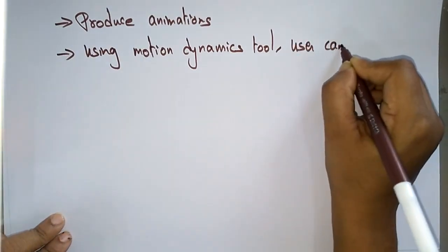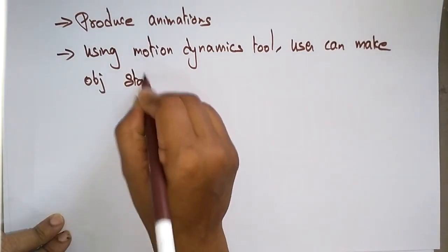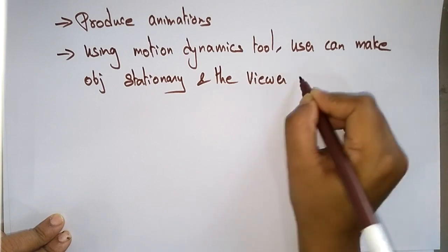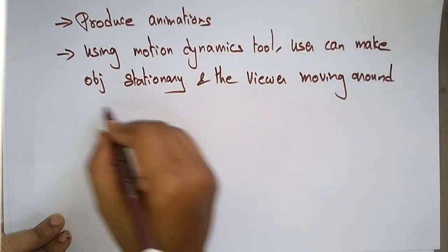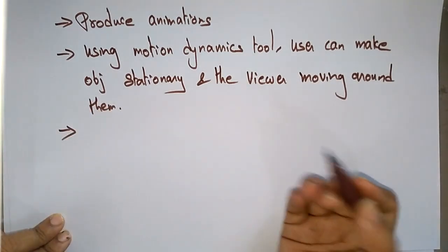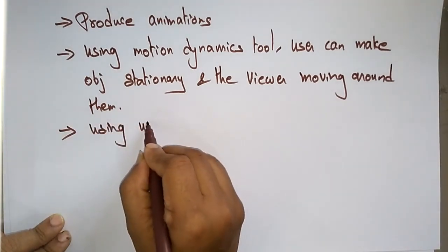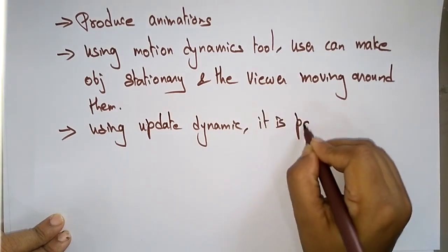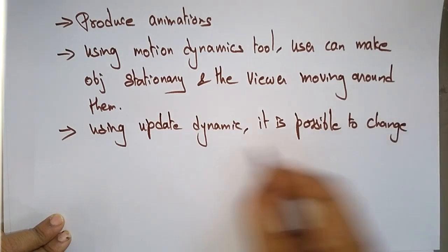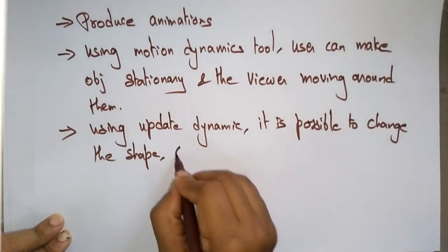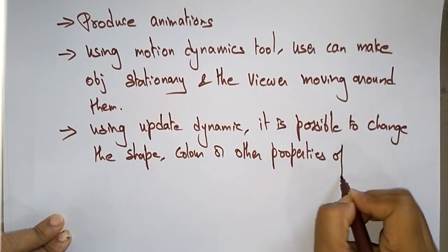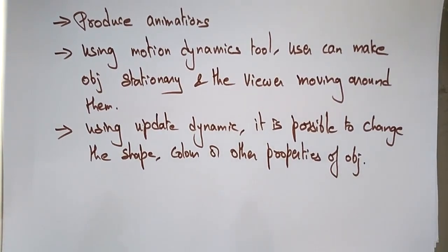Using update dynamic tools, it is possible to change the shape, color, or other properties of the object. So that covers what is computer graphics and what are the advantages of using computer graphics. Thank you.